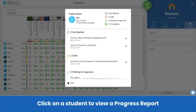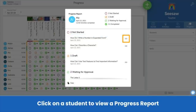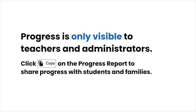Clicking on a student's name generates a progress report of completed activities for that student. You'll see a list of which activities are not started, drafts, waiting for approval, and completed. Click the link icon next to an activity title to open the activity, or click Copy on the bottom left to copy the report including activity links. Note that progress is only visible to teachers and administrators. To share progress with students and families, click Copy on the progress report and paste into an email or document.